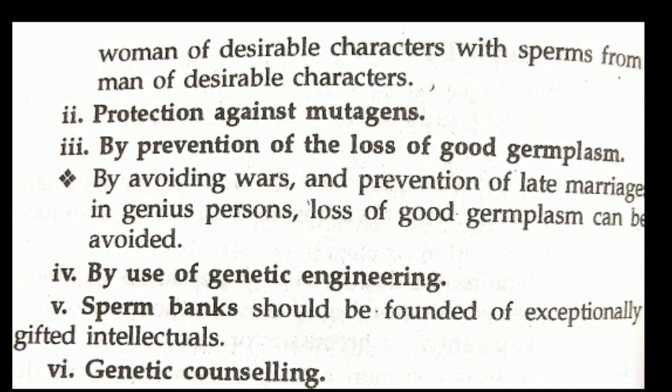Next is protection against mutagens, which is also positive eugenics. By applying the laws of inheritance, mutagens can be identified — mutagens cause mutation, which means a change in the sequence of DNA. Next is prevention of loss of good germplasm, which is also part of positive eugenics.